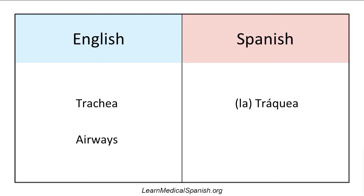Airways — and there are multiple ways to say this, so I'll give you one option. Las vías respiratorias. Another one I've seen written is caminos del aire, meaning air paths. This is kind of like the respiratory paths, so there are maybe some different ways to translate that.